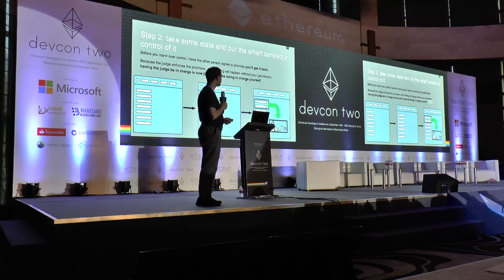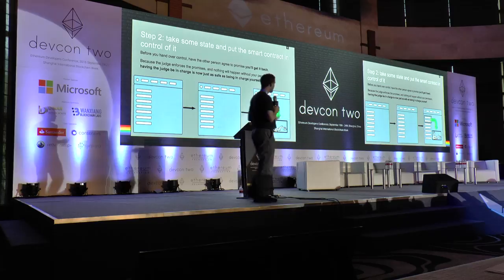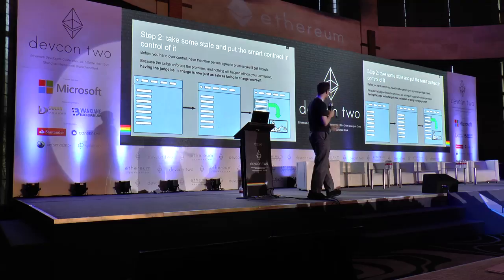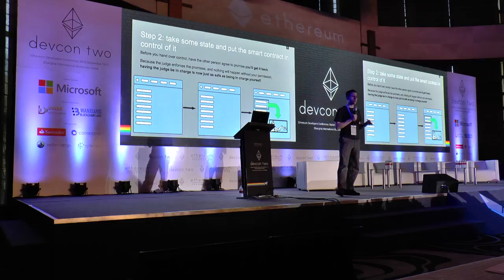With that principle, we can take a lot of very important things that your application does, take them off of the blockchain where it's expensive and slow, and make it cheap and instant, just directly between the partners. We want to take some state and put the smart contract in control of it. Before you do this, make sure you get a promise that you get control of that state back — that's very important. The judge will enforce these promises, and because in a state channel nothing can happen, no new promises can be added unless all parties agree, nothing can ever happen without your permission. That means having the judge in charge is still safe — it still gives you the guarantees of the blockchain, and the security and reliability of your app's execution.